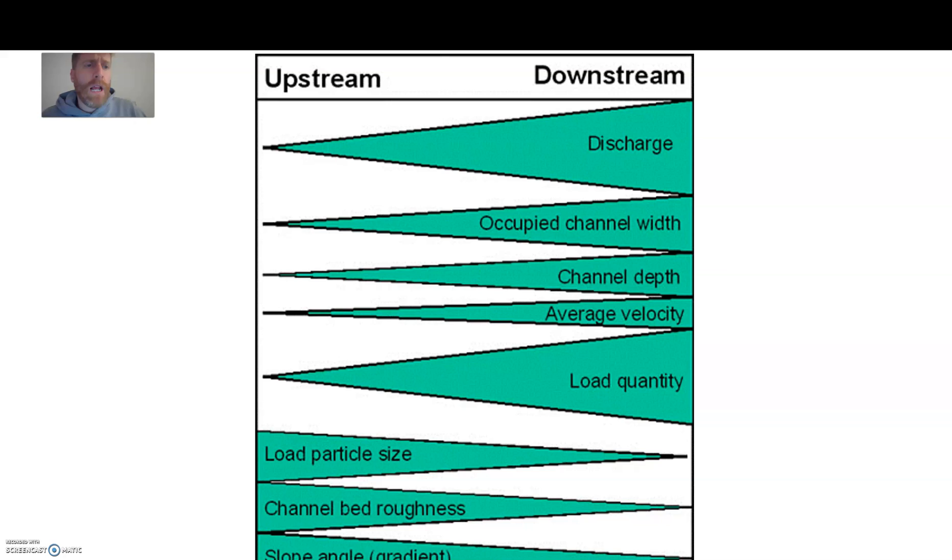In class I would be asking the students to discuss what this model shows and I'd like you to press pause and have a little think about what you think this model is showing. Okay, so hopefully you've had a look at that and tried to decide what's going on. This is called the Bradshaw model. And what it's showing is upstream and downstream, so if you like this is the source and this over this side is the mouth of the river. And what it's showing is a model to show how certain characteristics of the river change as you go downstream.